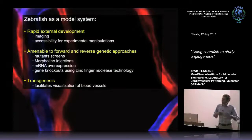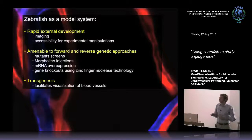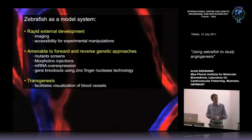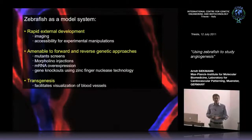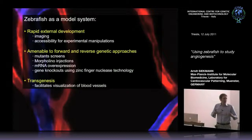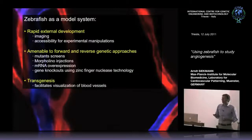Zinc finger nucleases are a reverse genetics approach where you start with a gene and ask what is its function. You can also produce transgenic zebrafish, which allows you to visualize the developing vascular system by expressing fluorescent proteins in the endothelial cells that line the blood vessels.